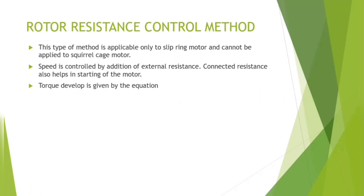The torque developed in this motor is given by the equation. S represents the slip, R2 represents the rotor resistance, E2 represents the terminal voltage, and X2 represents the reactance.